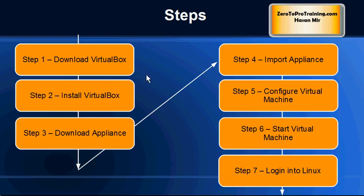Just to do a recap, these are the steps we will follow: download the VirtualBox software — the virtual machine we will be using, though you can also use VMware Server — then install VirtualBox, download the Linux appliance, import the Linux appliance into VirtualBox, and configure the appliance before starting the machine. We want to scale it down a little bit, and then once the machine is started we will sign in to the Linux operating system.